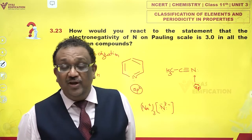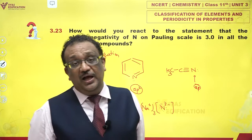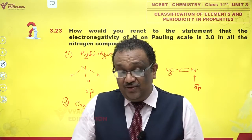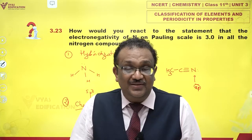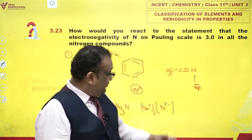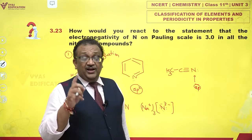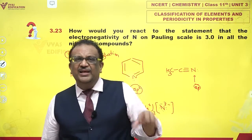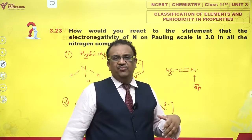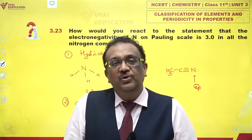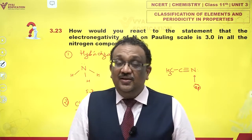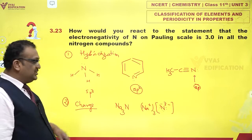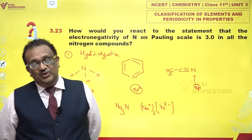So electronegativity also depends on the charge on the atom. As the positive charge on the atom increases, electronegativity increases; and as the negative charge on the atom increases, electronegativity decreases. So 3 is a very idealized value — it cannot be applied blindly everywhere. These two factors — hybridization and charge on the atom — are the major factors which affect electronegativity. Thank you.